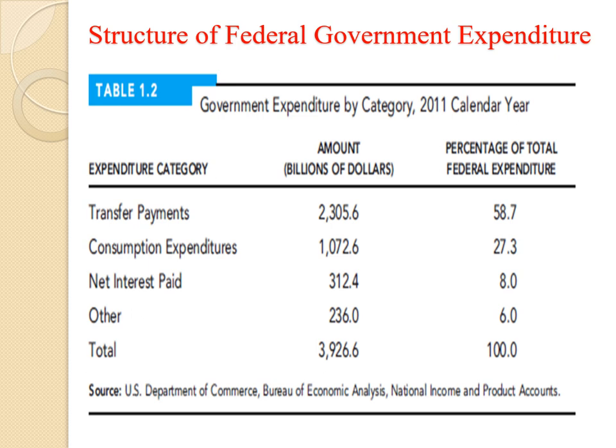Looking at the structure of federal government expenditures by category for the year 2011, the majority of government expenses are in transfer payments, which represent 58.7% of total expenditures. The second most important item is consumption expenditure — purchasing goods, services, and factors of production by the government — which represents 27.3%.